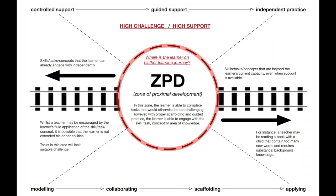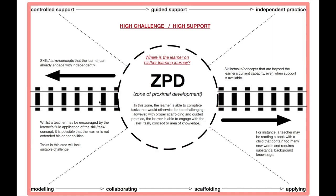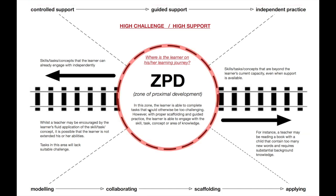We need to know where the learner is in his or her journey so we can pitch the learning and activities to be both challenging and achievable. This zone of proximal development continues to move as the learner develops — I put it on train tracks because it keeps shifting forward.